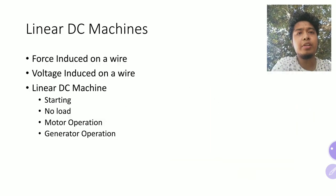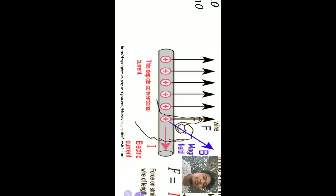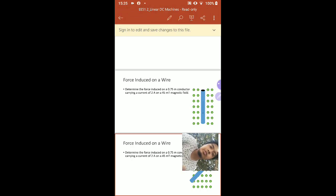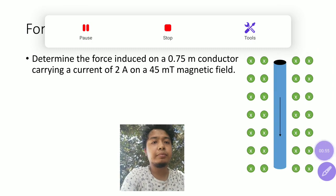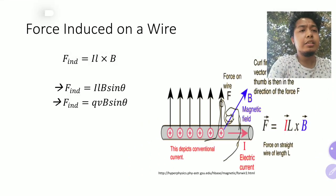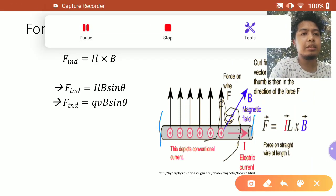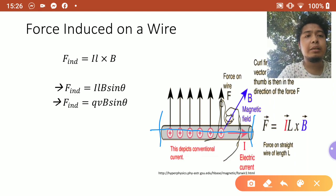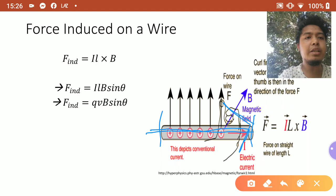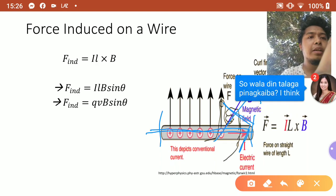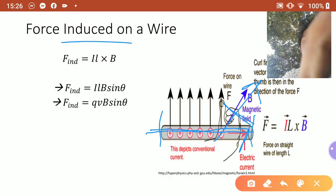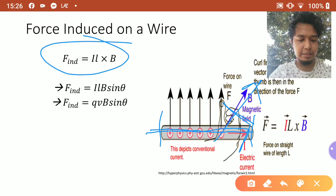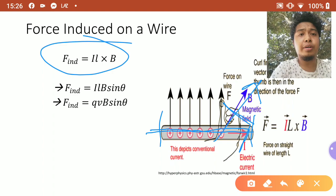Let's start with the force induced in a wire. Let's say for example that you have a wire of this length. You can induce a force on that wire by having a current flow through it within the presence of a certain magnetic field, such that the force induced in that wire can be calculated using this equation. It's basically your current times the length of the wire, cross product with your magnetic field.